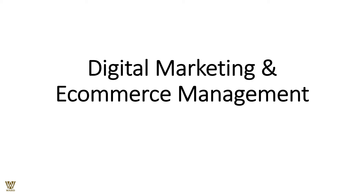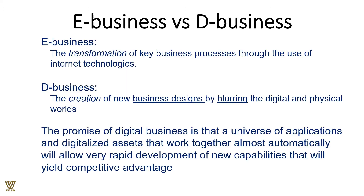Welcome everyone. Today in this presentation we'll be talking about digital marketing and e-commerce management. First and foremost, what is a digital business or electronic business? E-business is the transformation of key business processes through the use of the internet as a medium and technology. D-business is the creation of a new business by blurring the lines of digital medium and the physical world together — a concept called 'fidgeted.' The promise of digital business is that a universe of applications and digitalized assets work together almost automatically, allowing rapid development of new capabilities that yield competitive advantages.